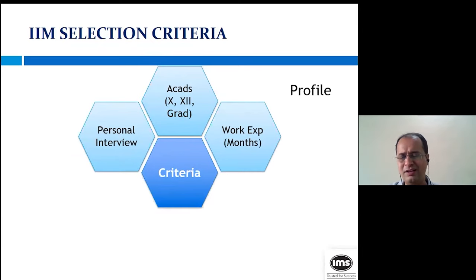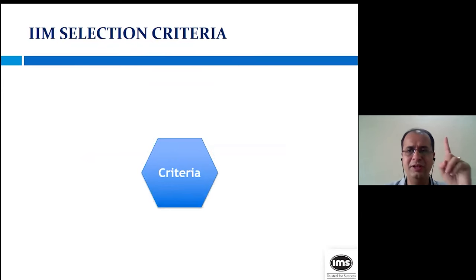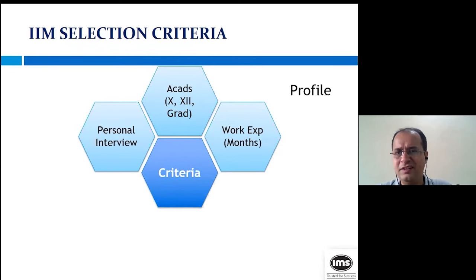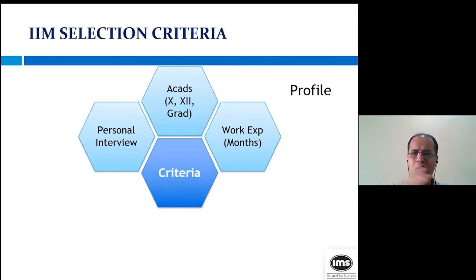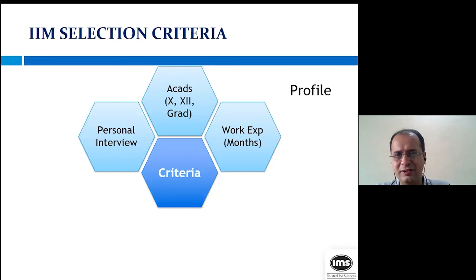I'm looking at the top six IIMs: Ahmedabad, Bangalore, Calcutta, Lucknow, Indore, and Kozhikode. I'm splitting the selection criteria — specifically the criteria to get the first call, which is when they invite you for the interview round. The parameters they call 'academics' are your 10th score, 12th score, and graduation score. Your 10th and 12th are already committed — there's nothing you can do about those.